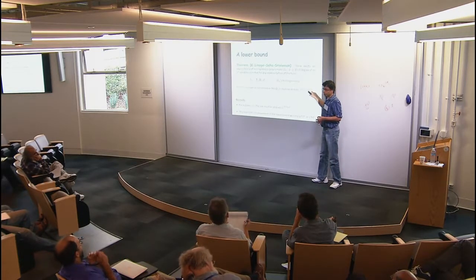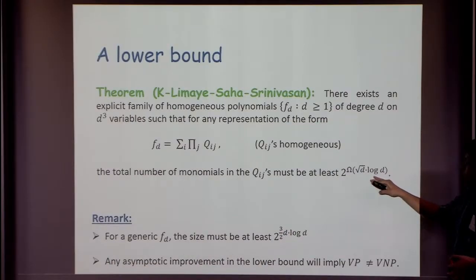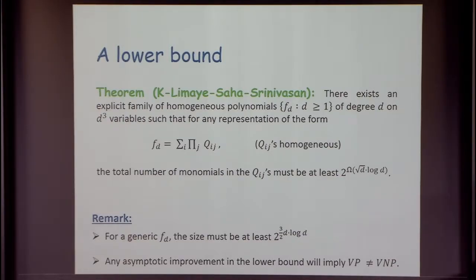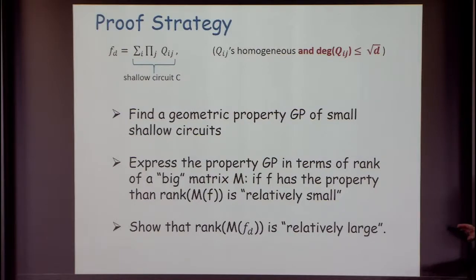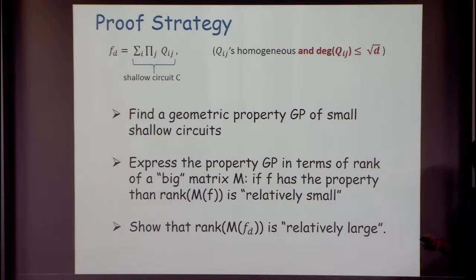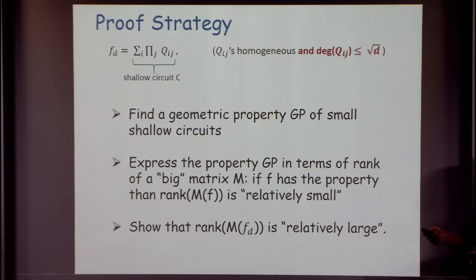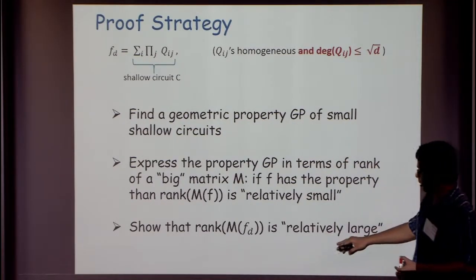Let me remind you of the lower bound: we want to write a polynomial as a sum of products of homogeneous polynomials, and prove a lower bound of roughly two to the square root d. Here is our proof strategy: identify a nice geometric property of small shallow circuits, express this geometric property as the rank of a large matrix, then show that for our explicit polynomial f_d this rank is large.